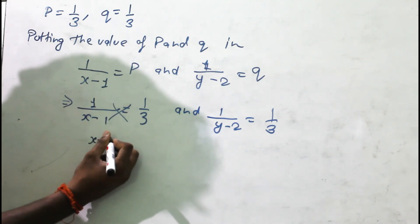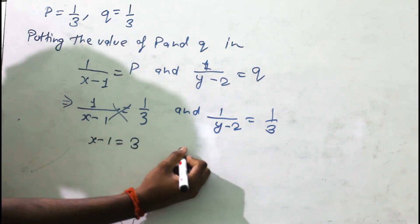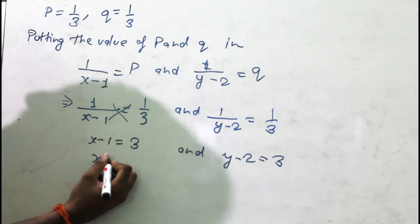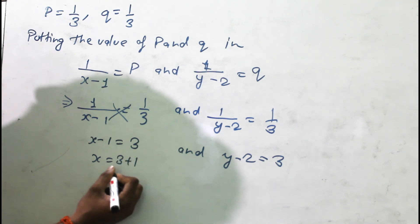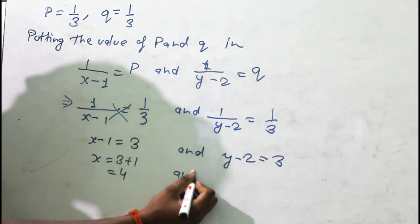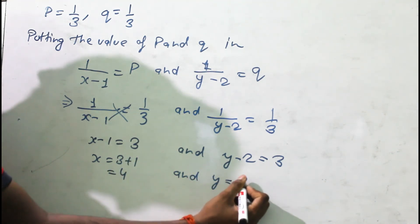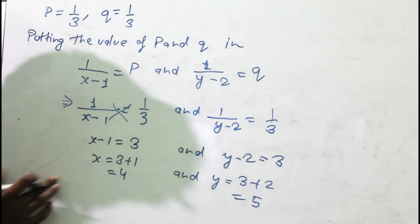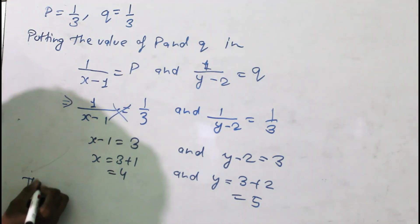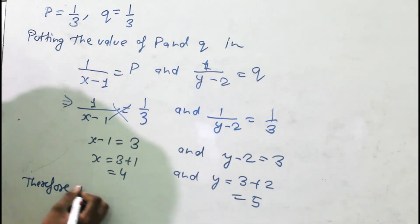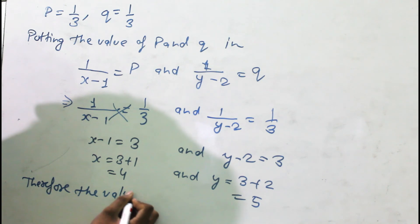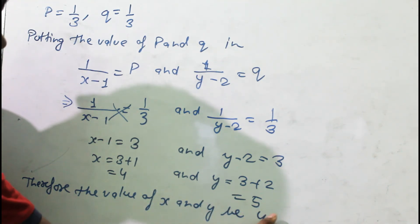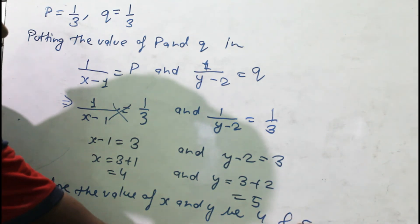From x - 1 = 3, we get x = 3 + 1 = 4. From y - 2 = 3, we get y = 3 + 2 = 5. Therefore, the value of x and y are 4 and 5.